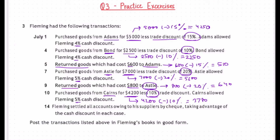Now the last entry — on July 14th, this is the most important entry. Fleming settled all accounts owing to his suppliers by cheque, that is through the bank, taking advantage of the cash discount in each case. This is the time when we will record the cash discount and settle the amount due.